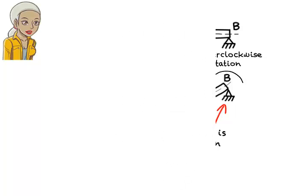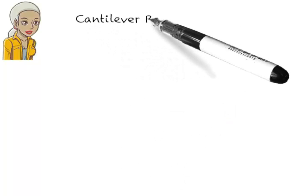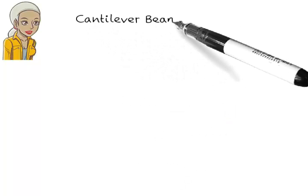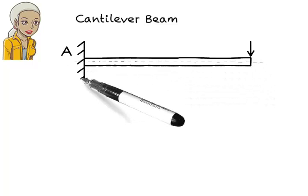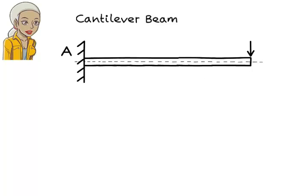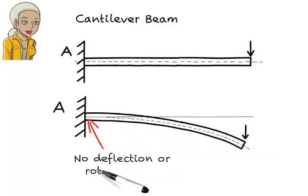How about a fixed support? How does it affect beam deformation? A fixed support prevents both deflection and rotation at the point of contact. Here is a cantilever beam with a fixed support at A. The beam bends downward, but at A it remains horizontal. That is, the beam neither deflects nor rotates at a fixed support.